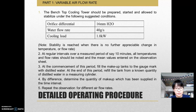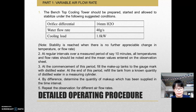Secondly, all the temperatures and readings should be observed at regular intervals over a period of say 10 minutes. Thirdly, at the commencement of this period, fill the make-up can to the gauge mark with distilled water. At the end of this period, fill the can with distilled water using a measuring cylinder. Fourth, by difference, determine the quantity of make-up water which has been supplied in the time interval. And lastly, repeat the observations for different experiments.